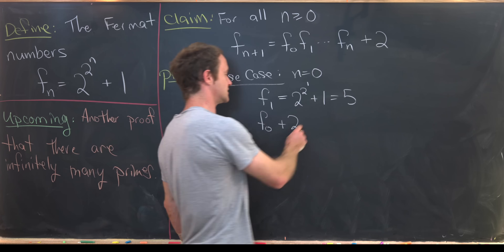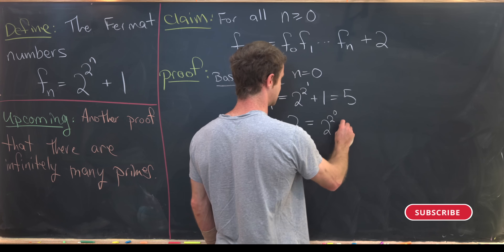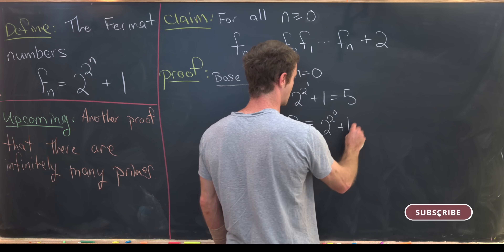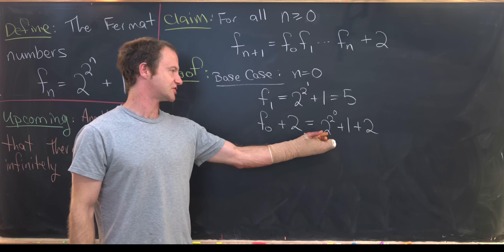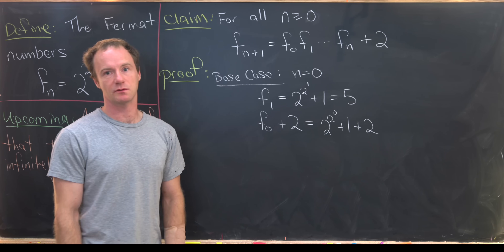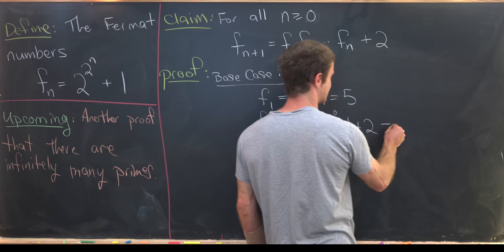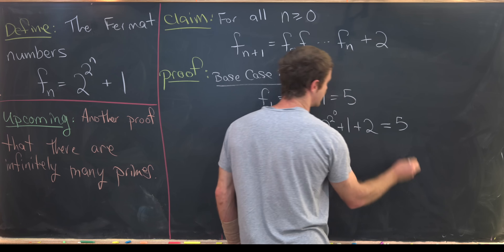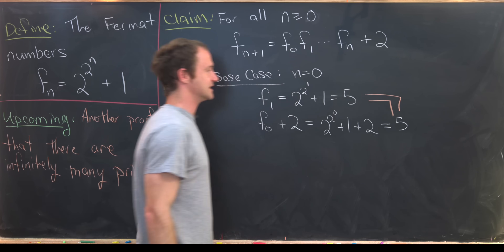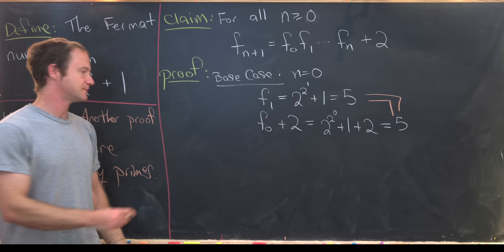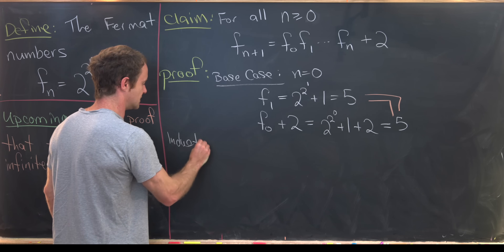The right-hand side is just a product of one term, F sub 0, which equals 2 to the 2 to the 0, plus 1, plus 2. That's 2 to the 1, which is 2, so we have 2 plus 2 plus 1, which is 5. So we have equality for this base case.